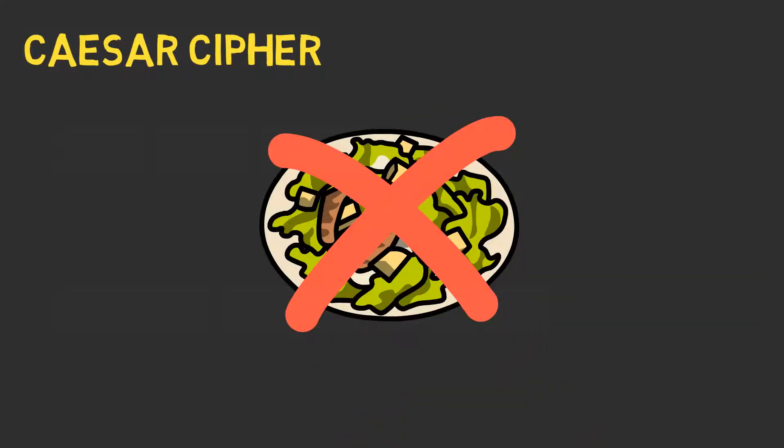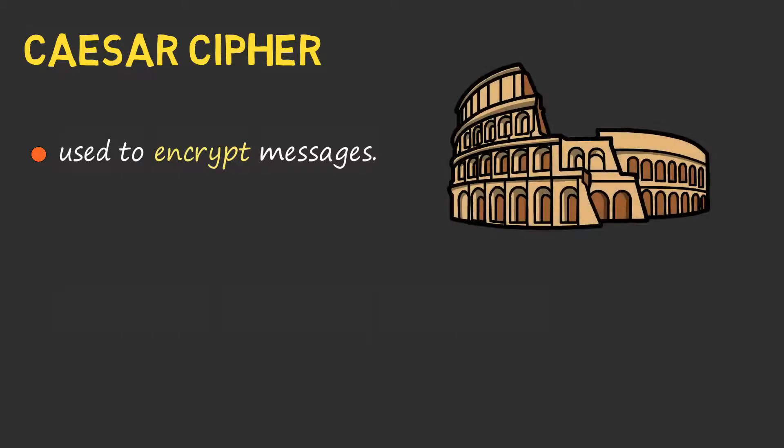First, let's see what it is. It is a method used to encrypt messages. It is called this because it was used by Julius Caesar to communicate with his troops.